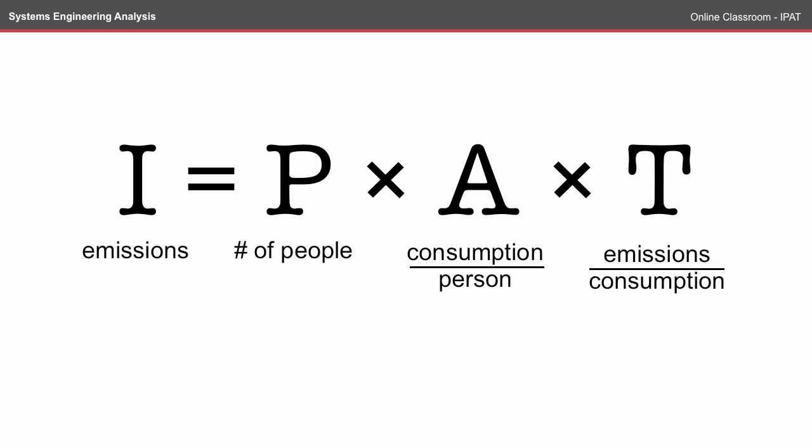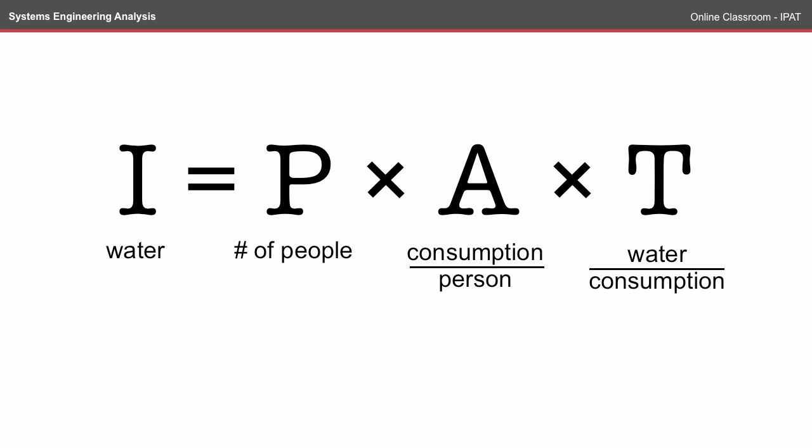If you put units against the IPAT variables, you could consider P as the number of people, A as the consumption per person, and T as the impact per unit consumption. In this case, we were looking at emissions, but you could just as easily look at water, for example.